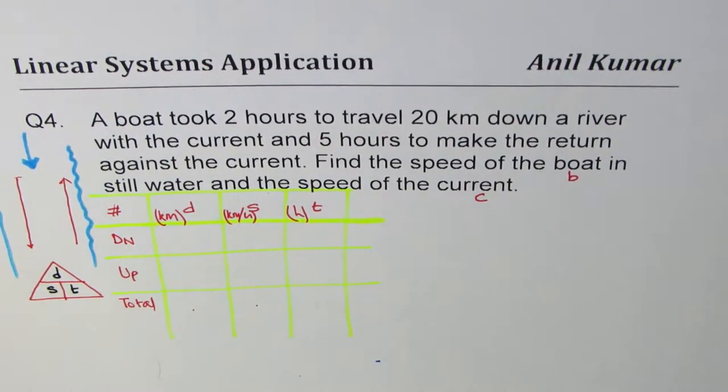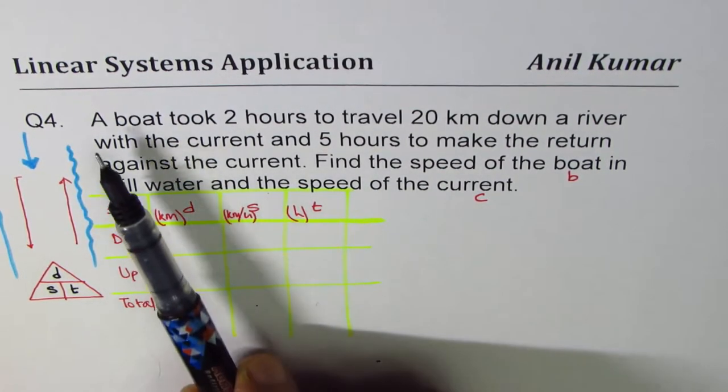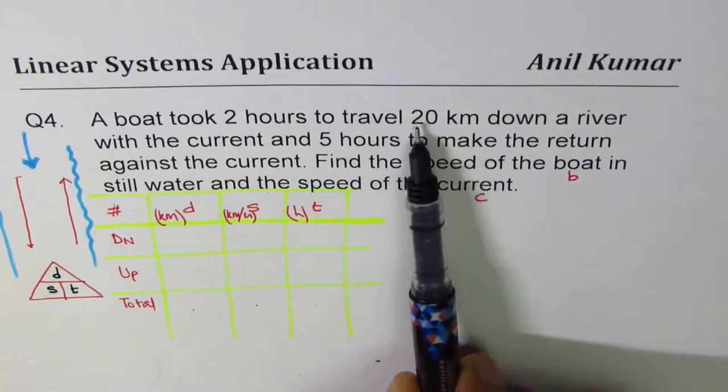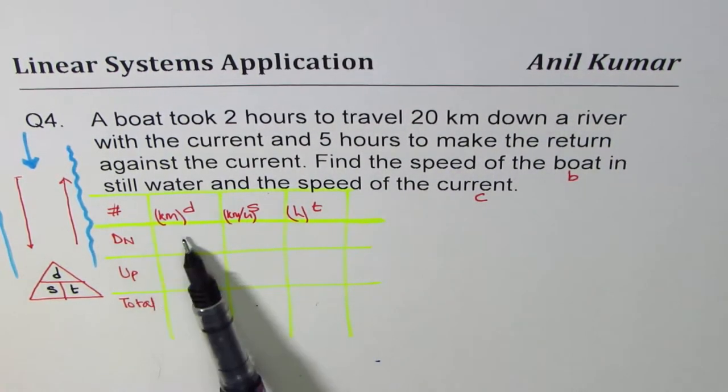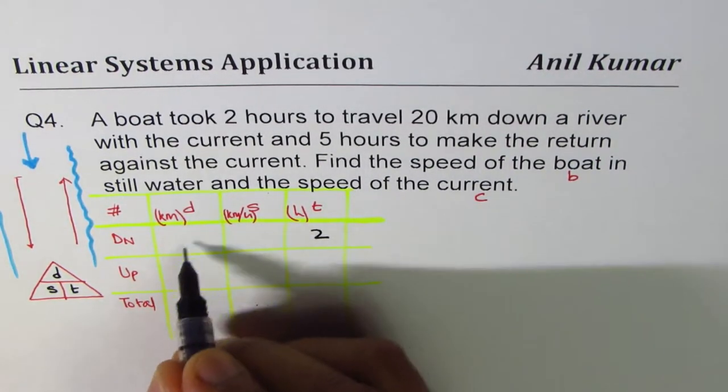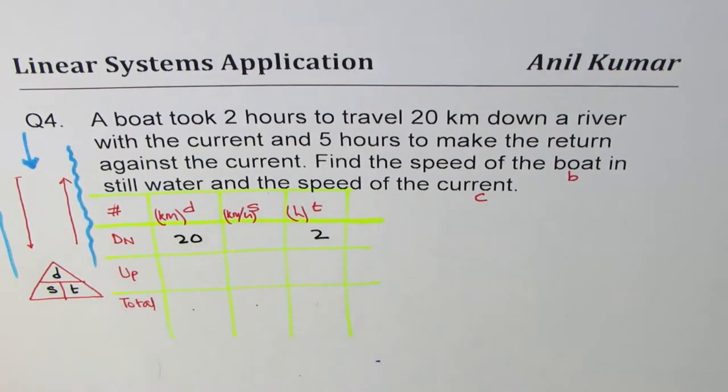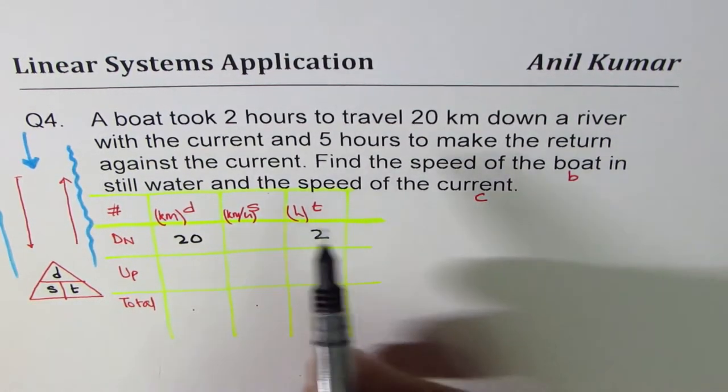Let's read the question now and fill in this table. A boat took two hours to travel 20 kilometers down a river. Very simple. Down a river means first row. Two hours, 20 kilometers. So time is two hours, distance is 20 kilometers.